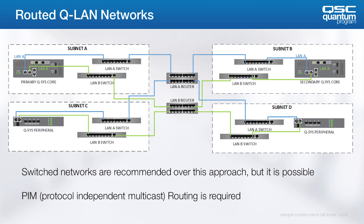As routers become more common in corporate networks, we see more systems configured like this diagram. If you're designing a system and there's no need for routing, we'd recommend the simplicity of a switched network. But as a Layer 3 protocol, QLAN is routable. There are three major considerations.